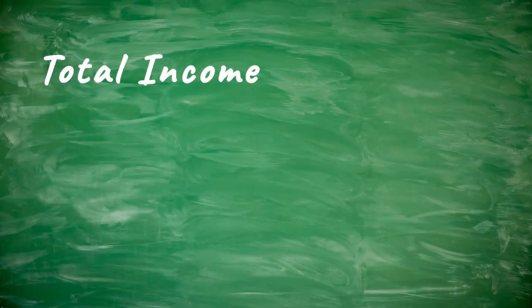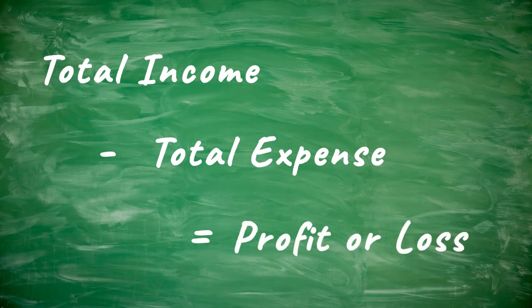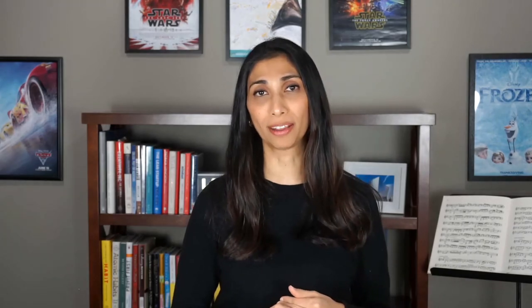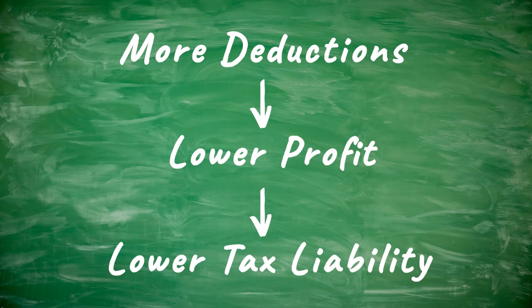The whole purpose of this form is taking that total income, subtracting the total expenses, and resulting in a profit or loss. This is so important because what we report here on profit or loss gets rolled into our personal tax form, and then that is used to help determine how much tax we're going to pay. The more deductions we have, the lower our profit and the lower our tax liability. I hope you found this video useful. For other great financial tips and ways to push your musical career forward, please check out the Invested Musician channel. Thank you.